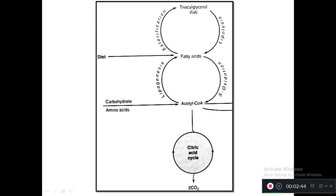This picture shows how the triglycerol or fat stored in adipose tissue is converted into fatty acid through a mechanism called lipolysis. This fatty acid undergoes beta oxidation to form acetyl-CoA, which enters the citric acid cycle. Similarly, acetyl-CoA can undergo lipogenesis to be converted into fatty acid, and that fatty acid can undergo esterification to be converted back into triglycerols.